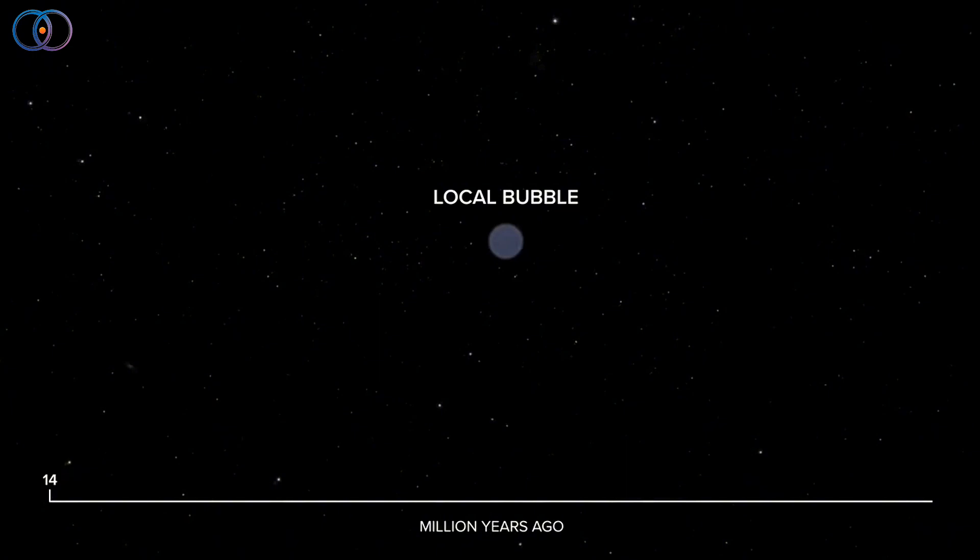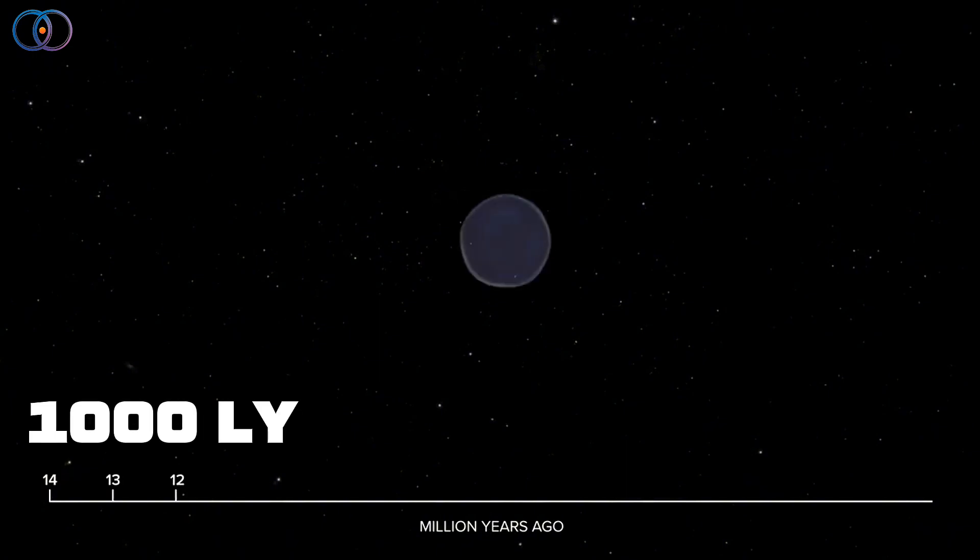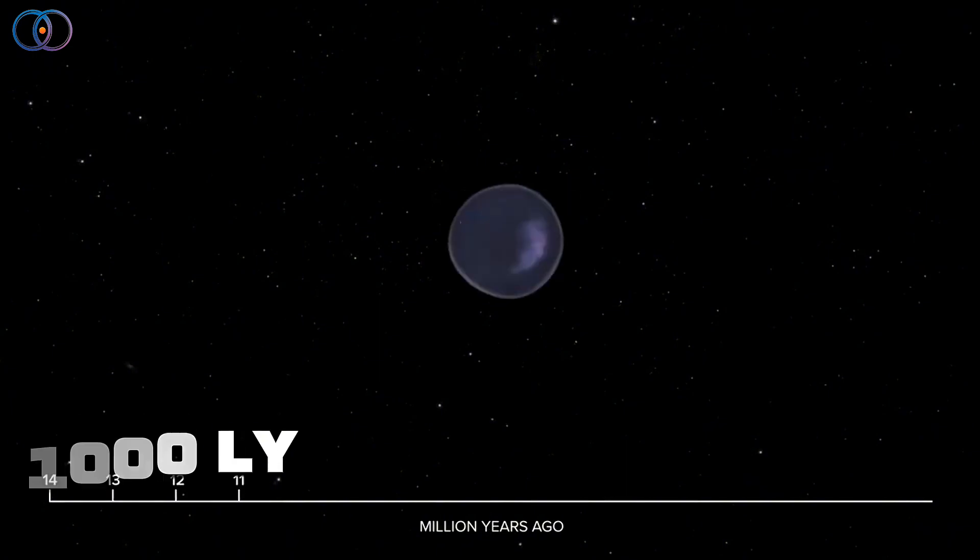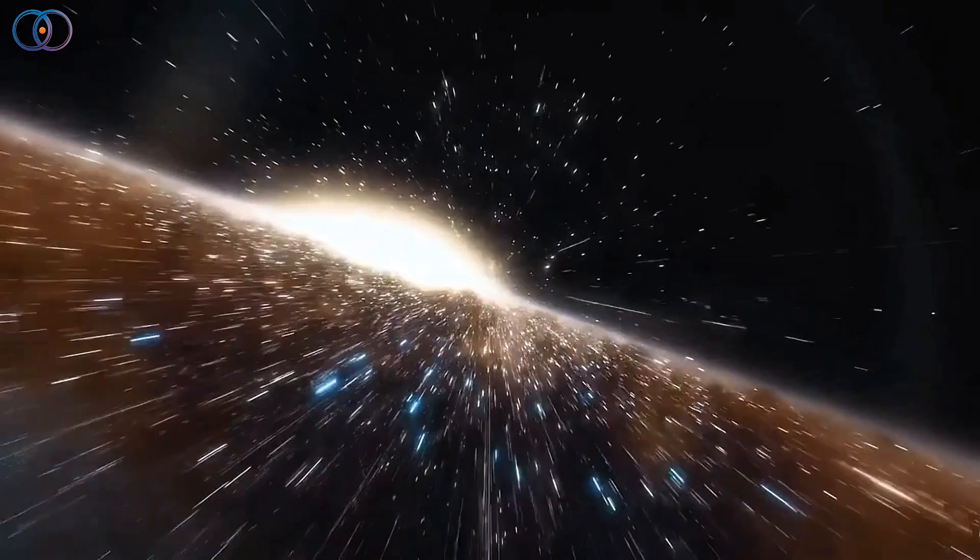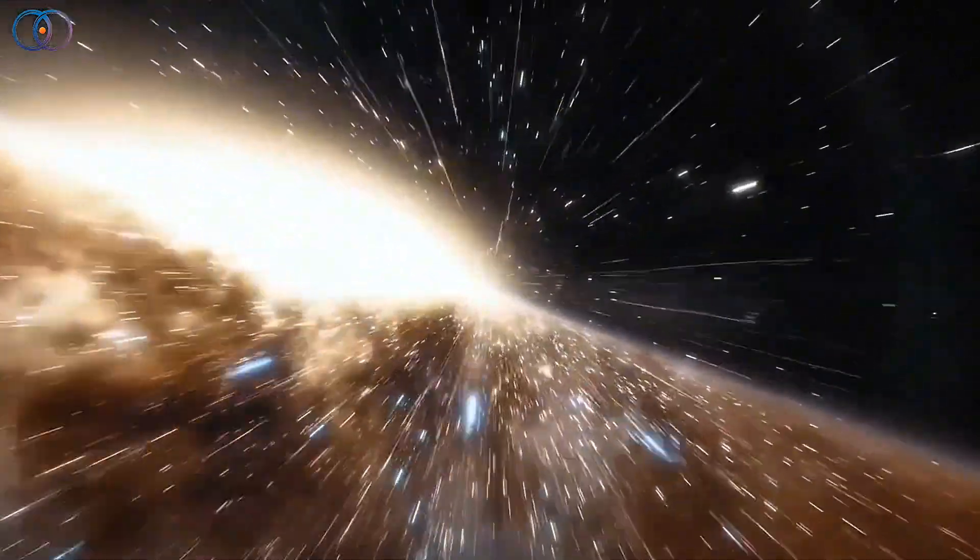This bubble, known as the Local Hot Bubble, is enormous, about 1,000 light-years across. To picture that, imagine something so big that light itself, moving at nearly 300,000 kilometers per second, would take 1,000 years to cross it.